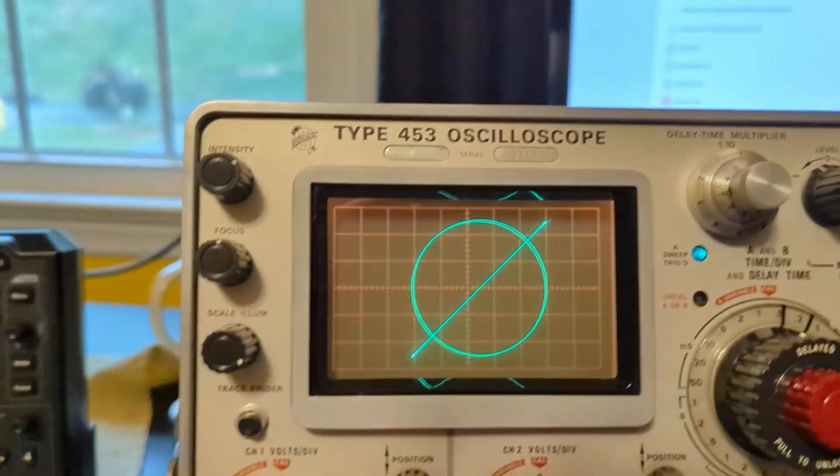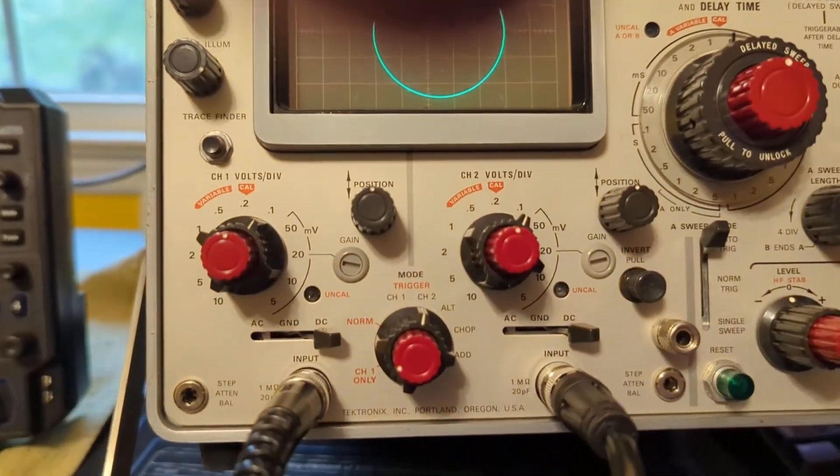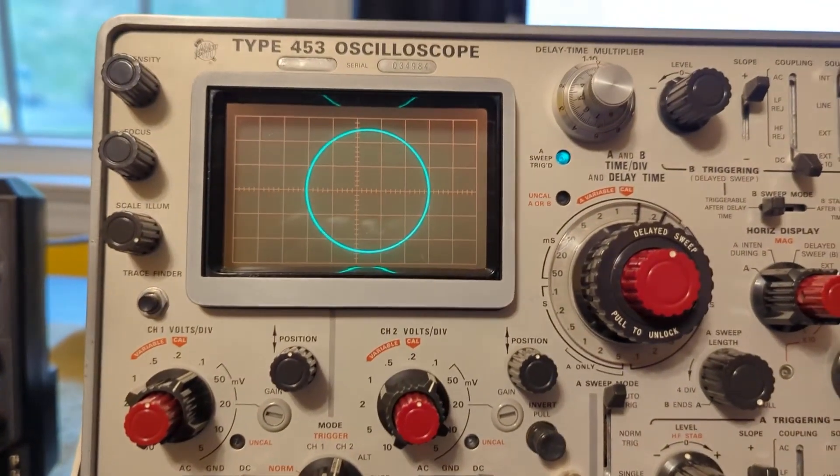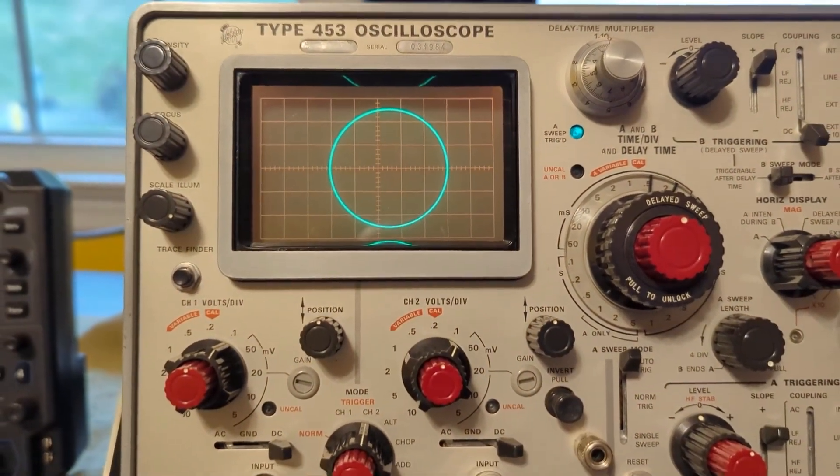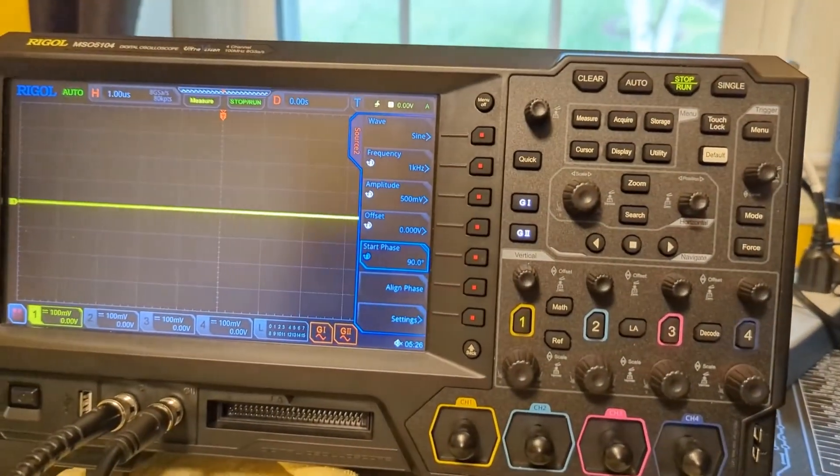In fact, what we want to do is change it to channel two only instead of alt that we were using before. And in fact, here we see the XY mode. Because these are 90 degrees out of phase, we get a circle. If I go over here with the knob, I'll move the phase on the second channel.